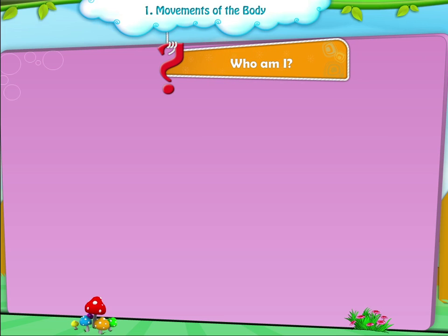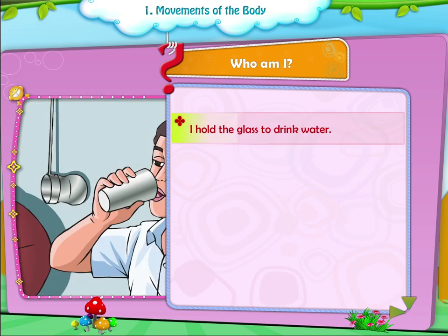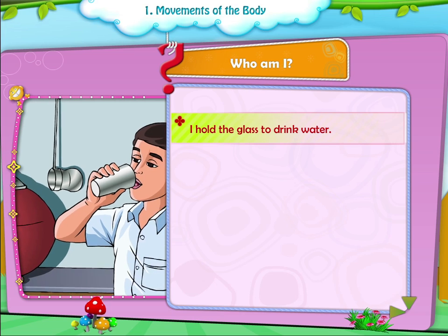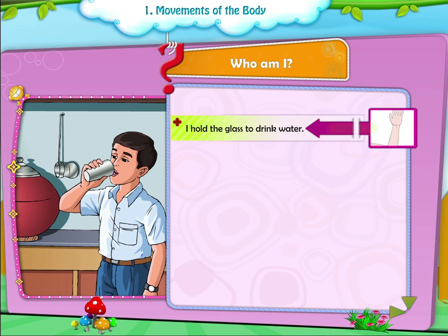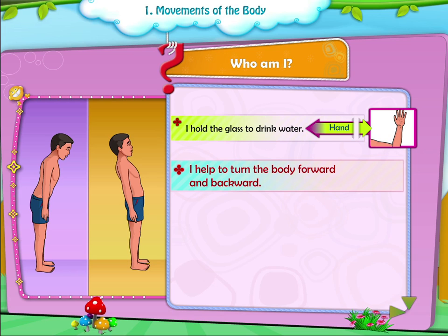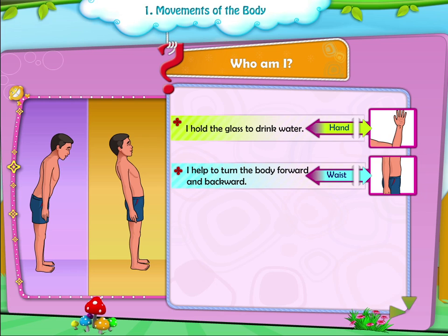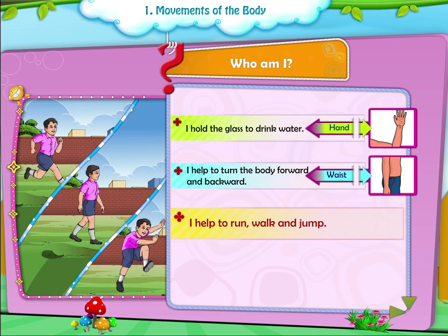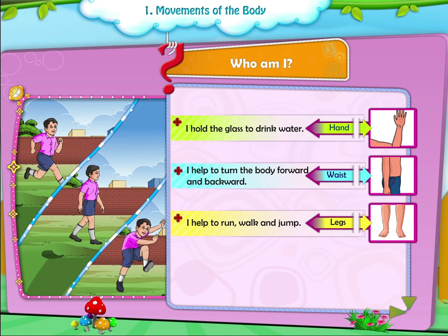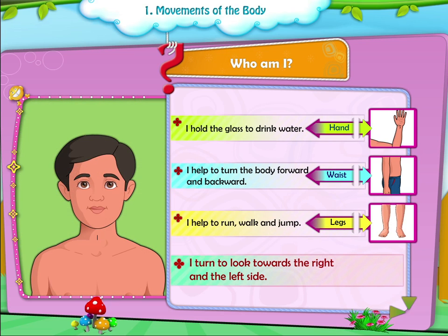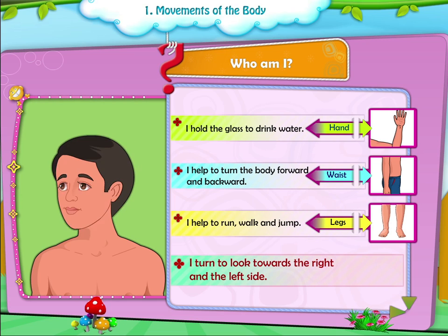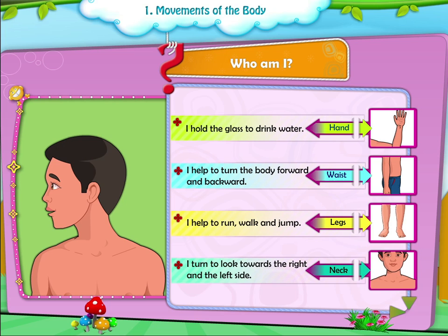Activity 5: Who am I? First) I hold the glass to drink water — Hand. Second) I help to turn the body forward and backward — Waist. Third) I help to run, walk and jump — Legs. Fourth) I turn to look towards the right and the left side — Neck.